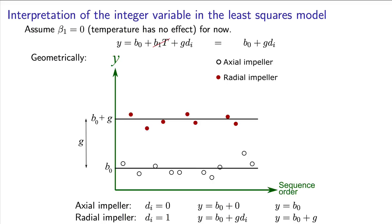Imagine you built a least squares model for this and calculated a confidence interval for gamma, which is being estimated by g. As long as that confidence interval for the population effect of the impeller, gamma, does not span zero, we can say that the impeller has a significant effect on the output y. If that confidence interval did span zero, then we would say that the impeller has no statistically significant effect on the output y.